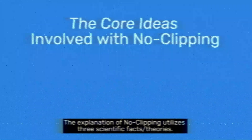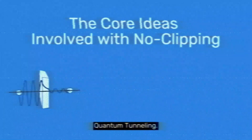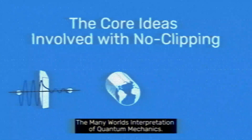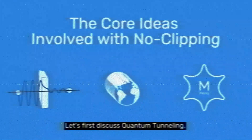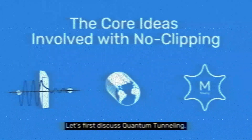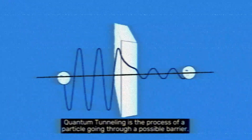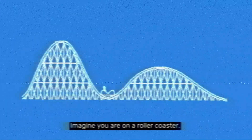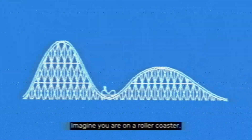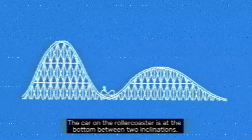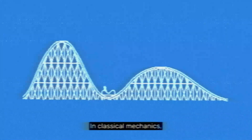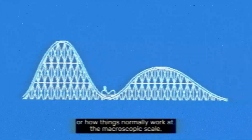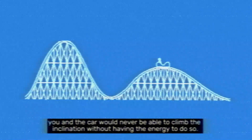The core ideas involved in the explanation of no-clipping utilize three scientific facts and theories: quantum tunneling, the many worlds interpretation of quantum mechanics, and M-theory. Let's first discuss quantum tunneling. Quantum tunneling is the process of a particle going through a potential barrier. Imagine you are on a roller coaster — the car is at the bottom between two inclinations. In classical mechanics, at the macroscopic scale, you in the car would never be able to climb the inclination without having the energy to do so.